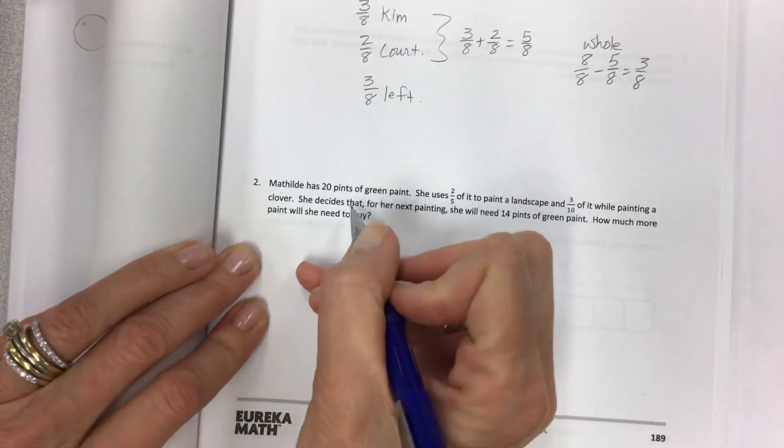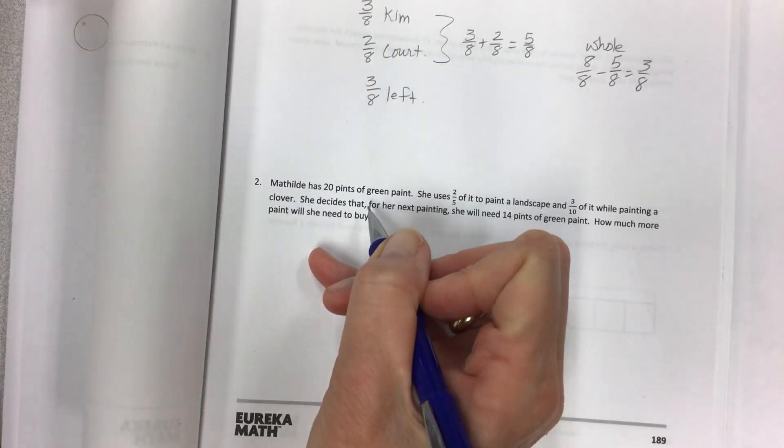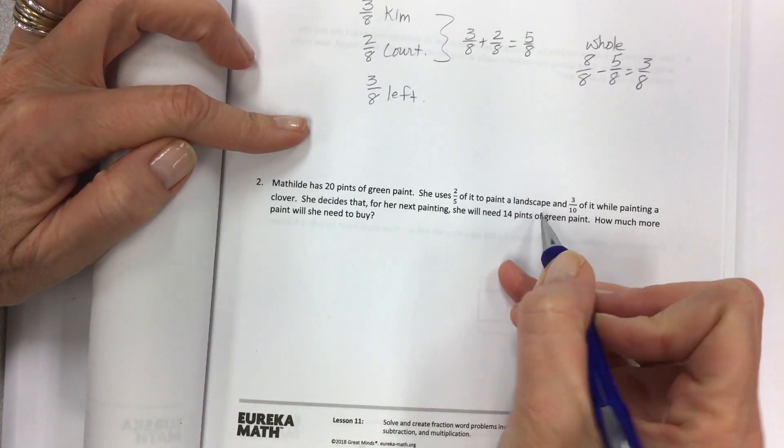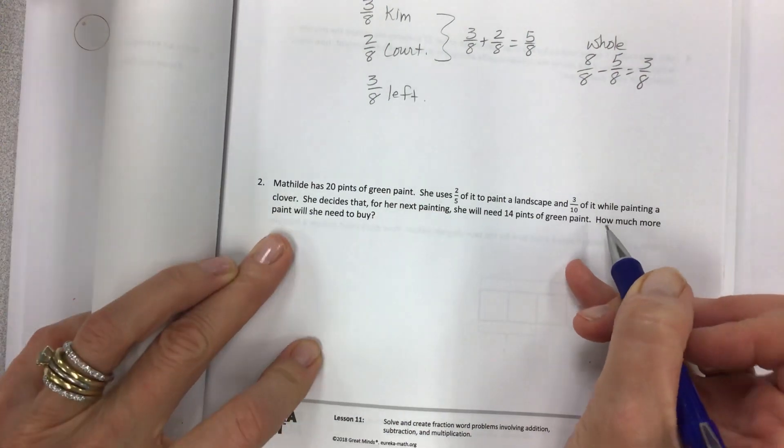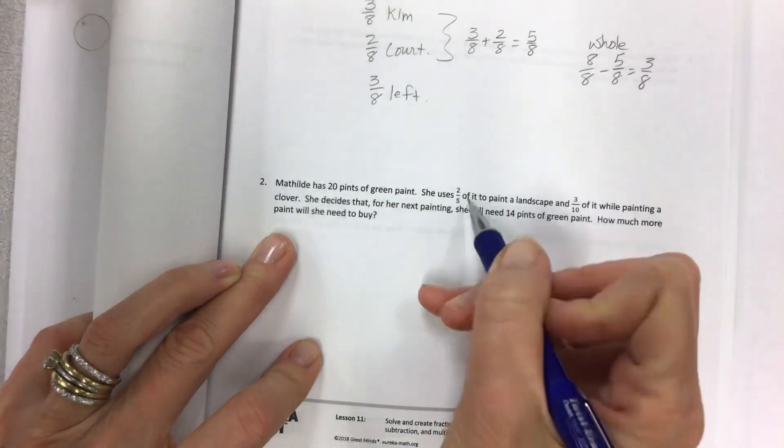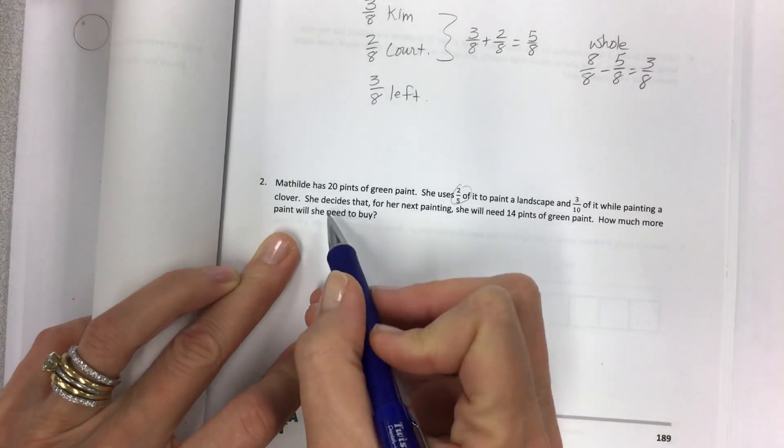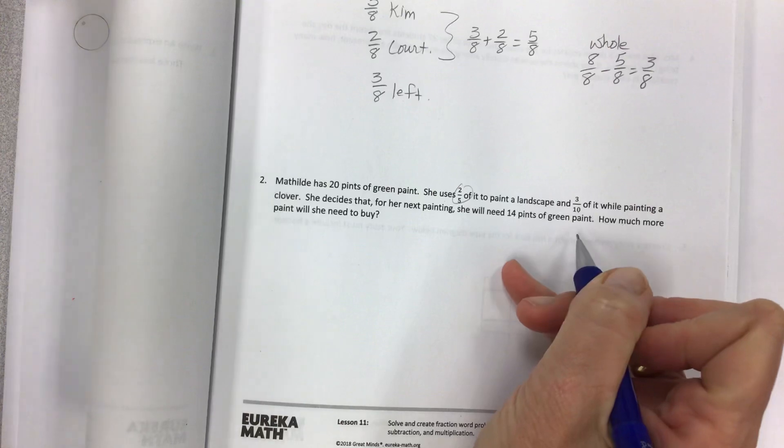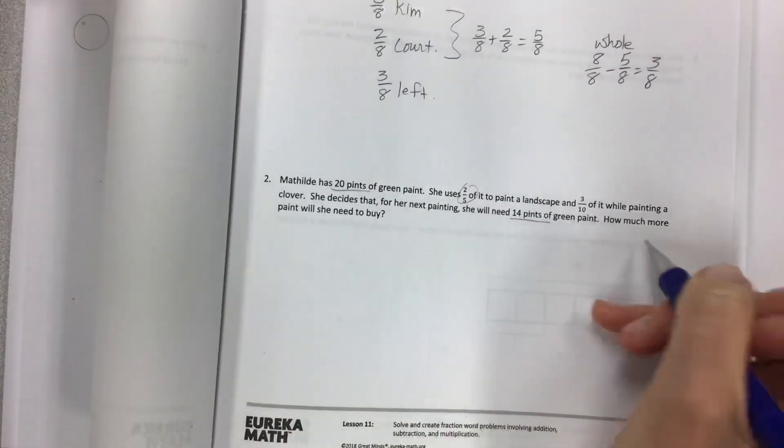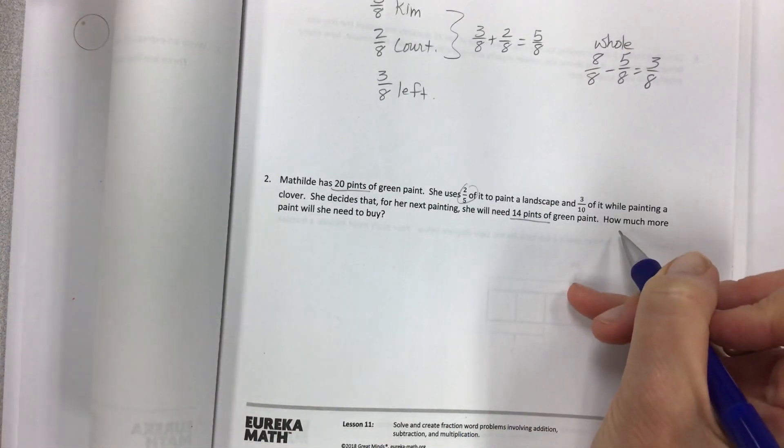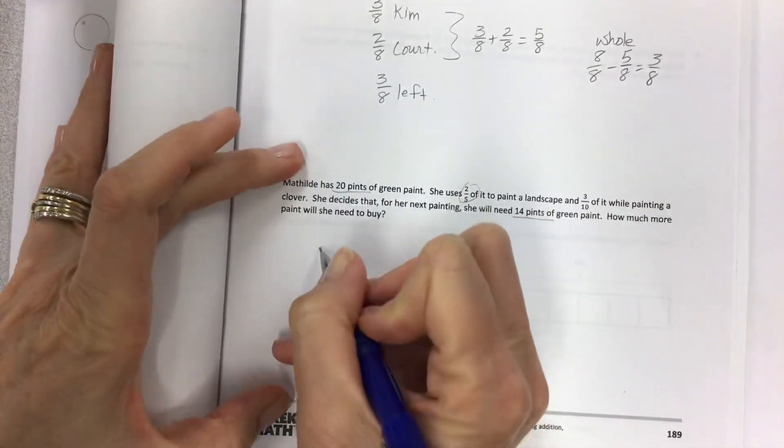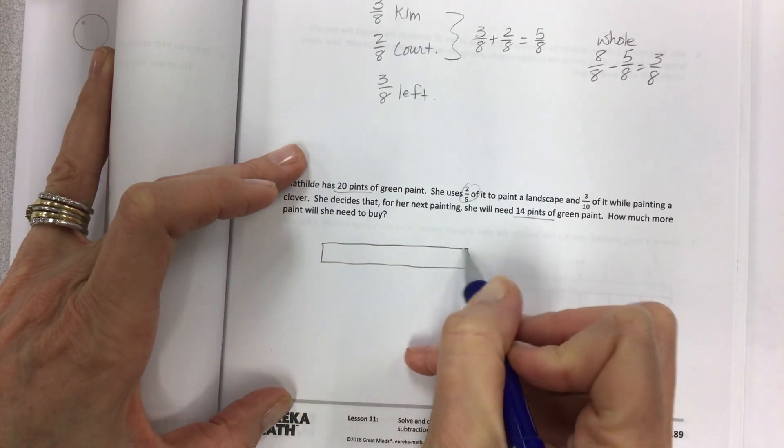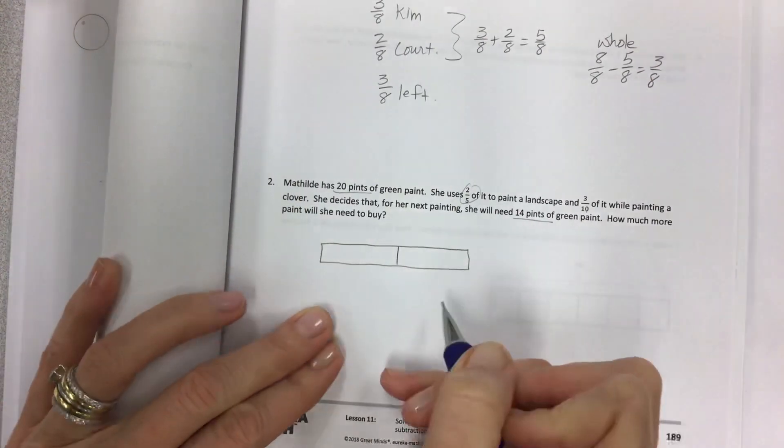Matilda has twenty pints of green paint. This one's a little bit more complicated. She uses two-fifths of it to paint a landscape, and three-tenths of it while painting a clover. And again, we don't want to use fifths, we're going to use tenths. She decides that for her next painting, she will need fourteen pints of green paint. That's important information, so highlight it. How much more paint will she need to buy?